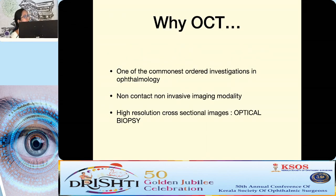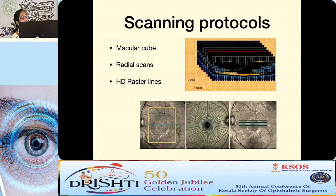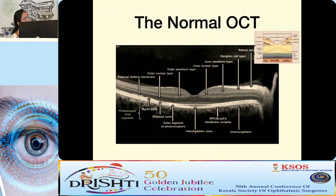Why do we need to understand OCT? Because it is one of the most common investigations ordered in ophthalmology — a non-contact, non-invasive imaging modality giving high-resolution cross-sectional images equivalent to an optical biopsy. To get the maximum out of an OCT, be aware of scanning protocols: the macular cube provides multiple B-scans through the macula with horizontal, vertical, and radial line scans. Radial scans spanning the fovea give high-resolution images of that area. High-resolution raster line scans — such as five-line scans — are useful for imaging focal pathology in greater detail.